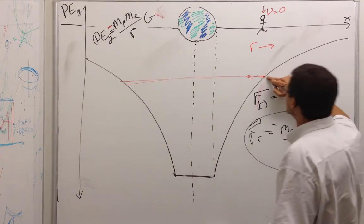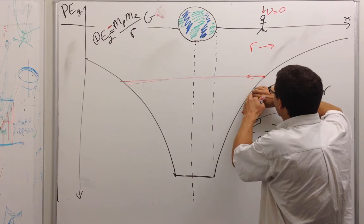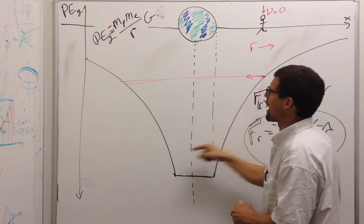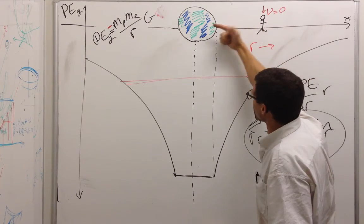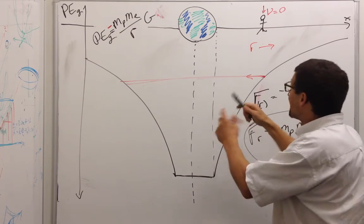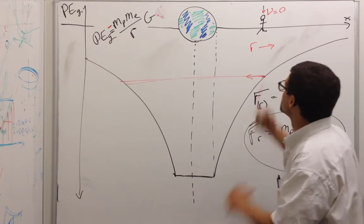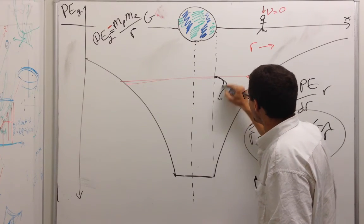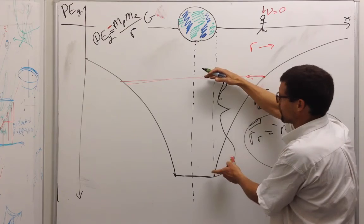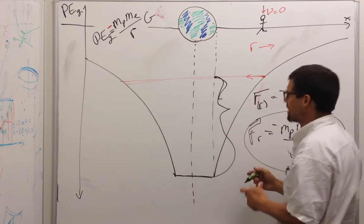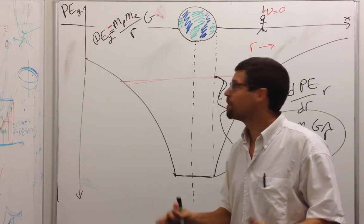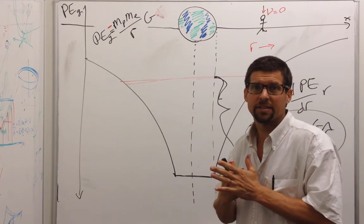And so what you can see is this force can be thought of as the result of the slope of the potential energy graph. The force pulls you to a lower potential energy, and you could find out how fast you were going when you hit the planet's surface right there. That would be this change in potential energy. That loss of potential energy would turn into kinetic energy, would turn into heat when you hit the surface and stopped.